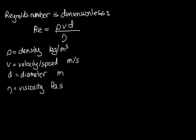The SI units for mass are kilograms. The SI units for acceleration are metres per second per second — ms to the minus 2. And the units for area are metres squared. So we can cancel one metre with another metre.